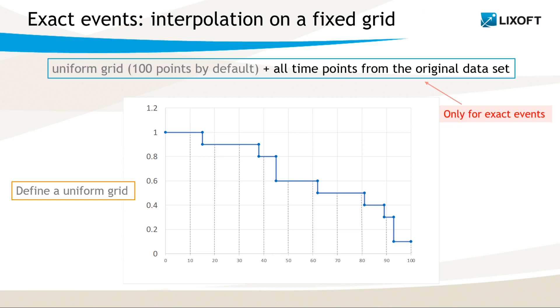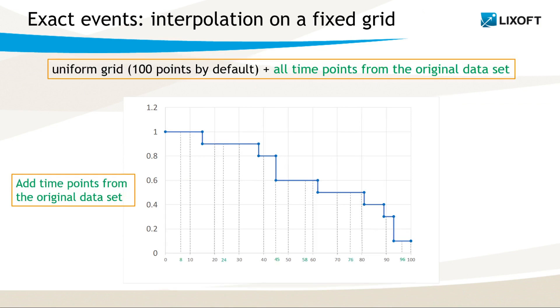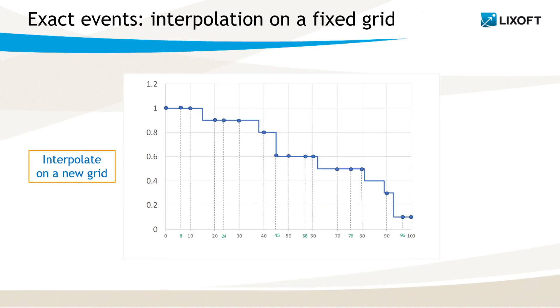In Monolix, by default, we use a uniform grid with 100 points. For exact events, we add to it all time points from the original dataset so that we keep all possible information. In case of interval-censored events, the exact time is unknown by definition, so time points from the dataset do not carry more information. Then we interpolate each Kaplan-Meier curve on this new grid.